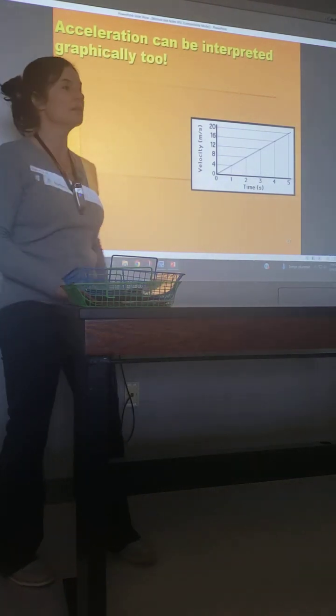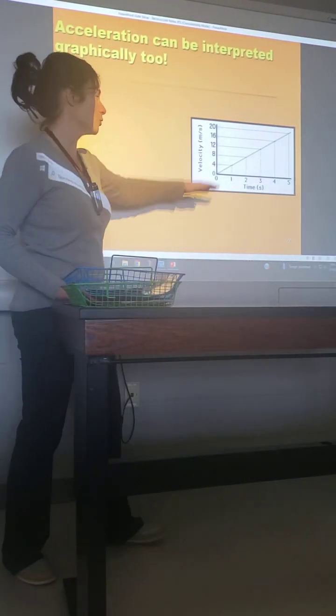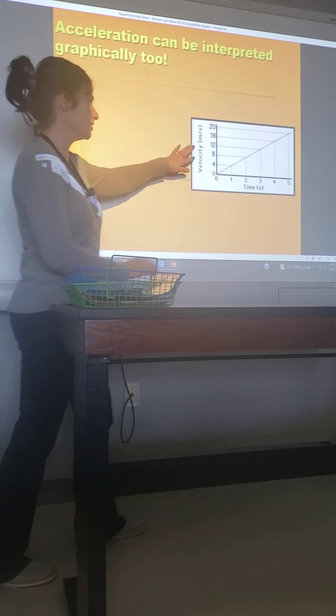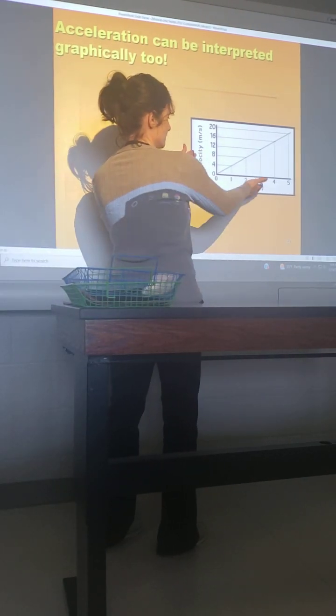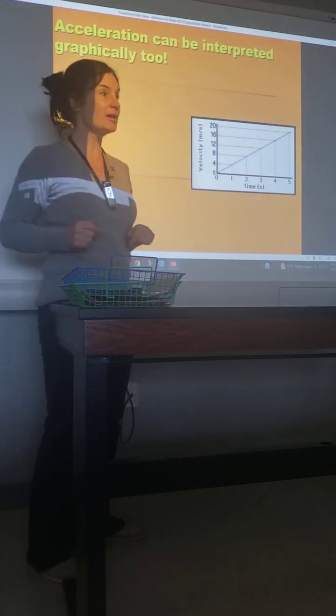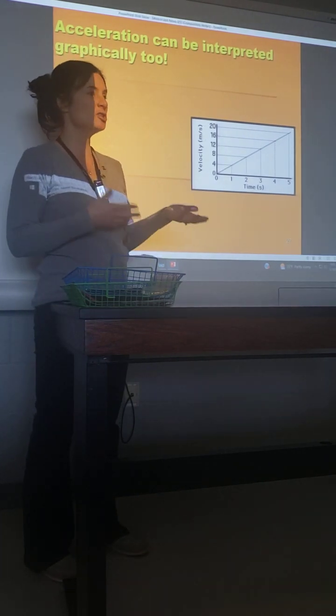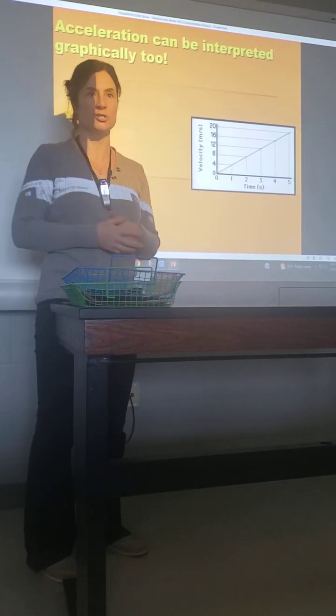When we're looking at a velocity versus time graph, the slope is going to show its acceleration. It just matches the variables of the equation. Velocity divided by time, that's the acceleration equation. Position divided by time, that's the velocity and speed equation.